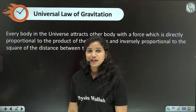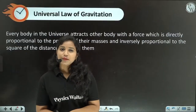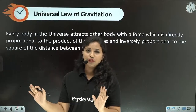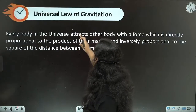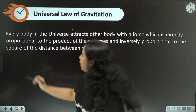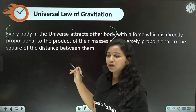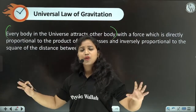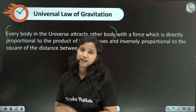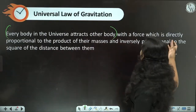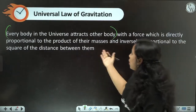Let me explain it letter by letter. First: everybody in the universe attracts every other body — that is the force of attraction. With a force which is directly proportional to the product of their masses — this is the force proportional to masses.